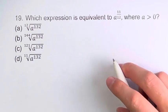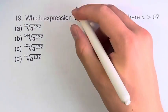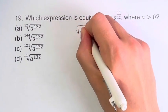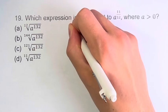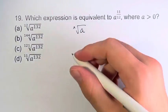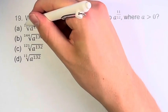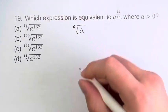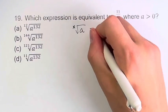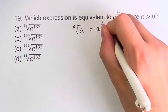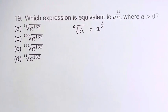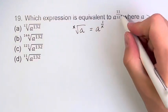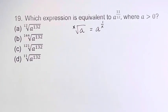To solve this problem, we're first going to have to notice something. If we have something that is the x-th root of a — here we have the 12th root of a, here we have the 144th root of a — that is equal to a to the 1 over x. We're going to use that to convert these into something that looks a lot more like this, and one of them will match up exactly.